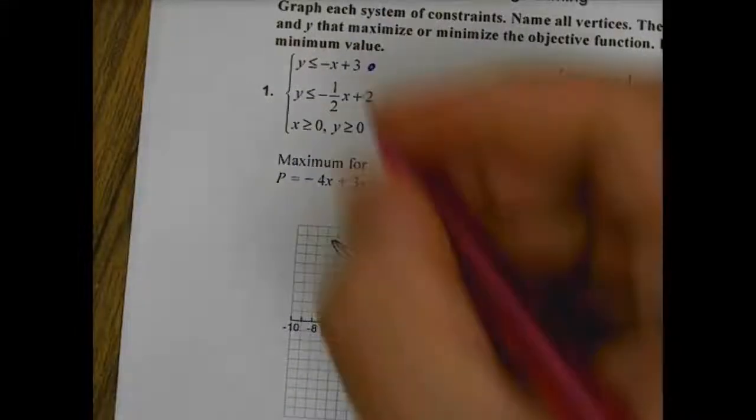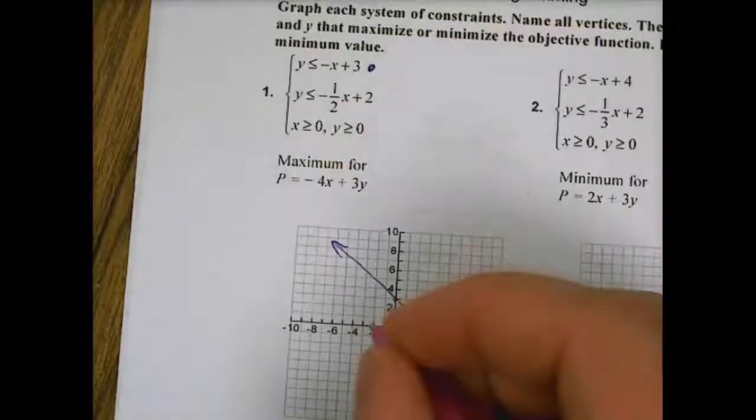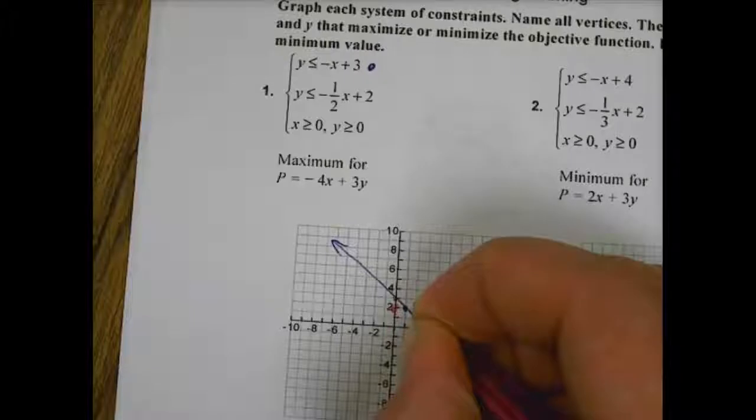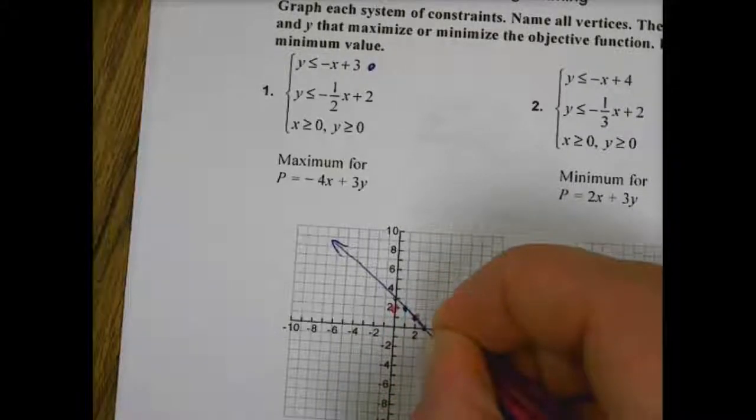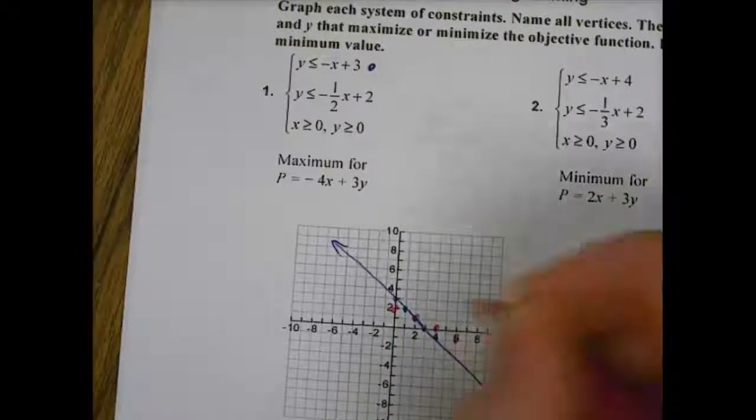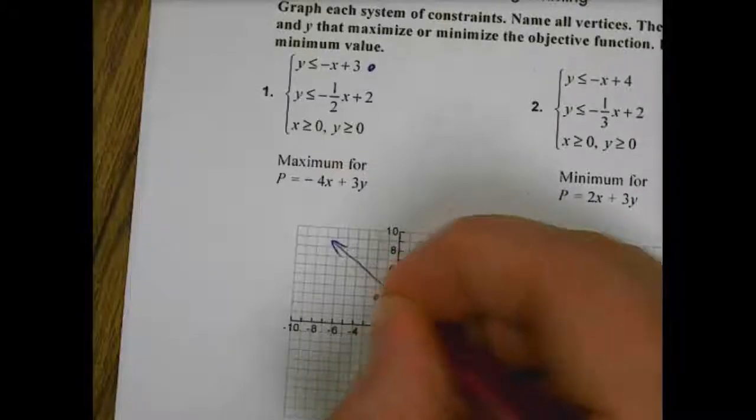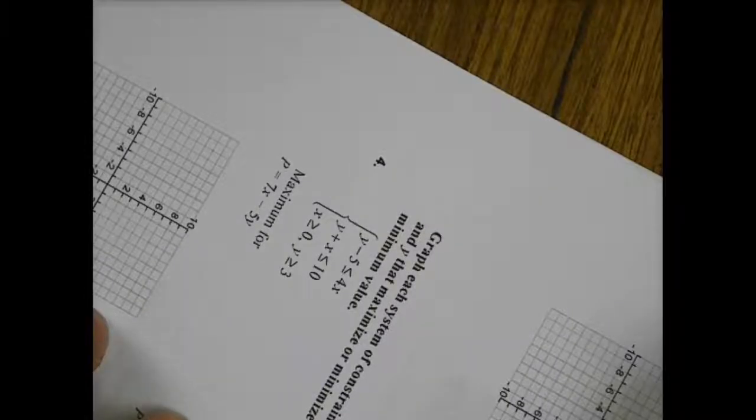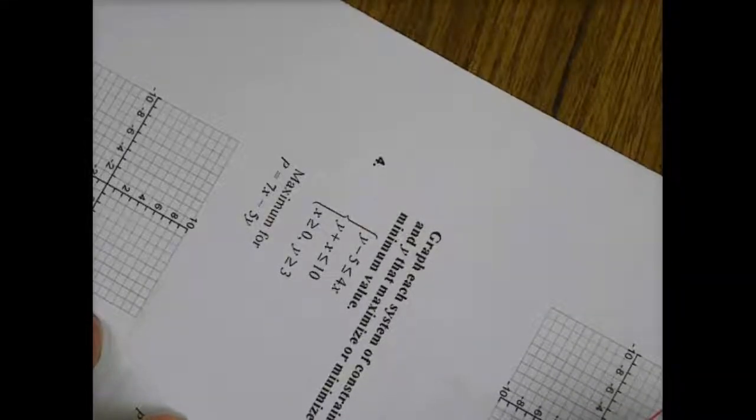We also have y equals negative one-half x plus 2. So I will cross at 2 and my slope will be down 1 over 2, down 1 over 2, down 1 over 2. The more points you can put on this, the better off you'll be, I promise, because we really need to have super accurate points in order to graph these correctly. So that line would be right there.